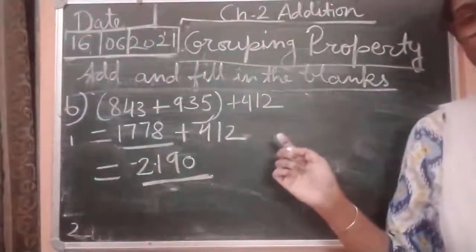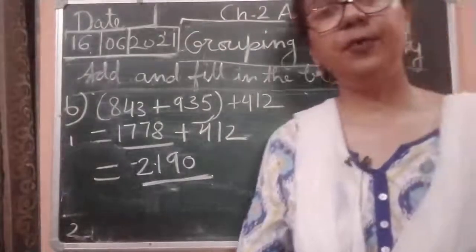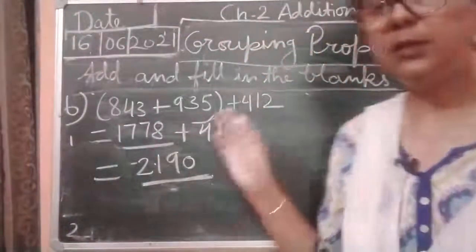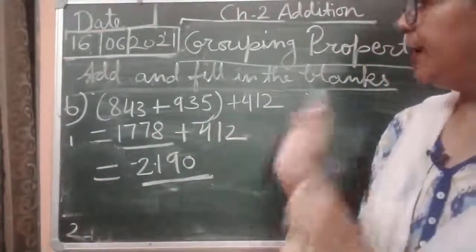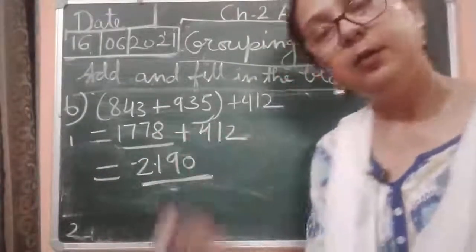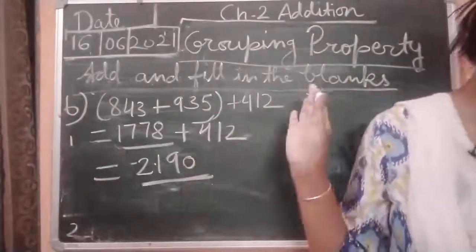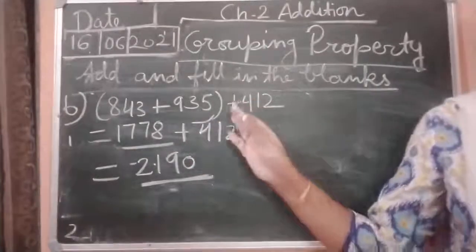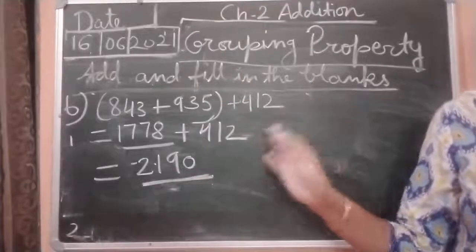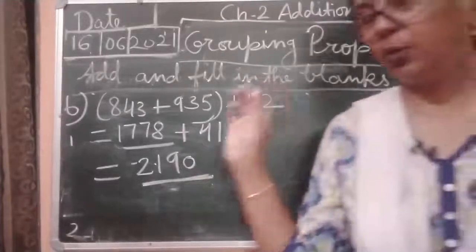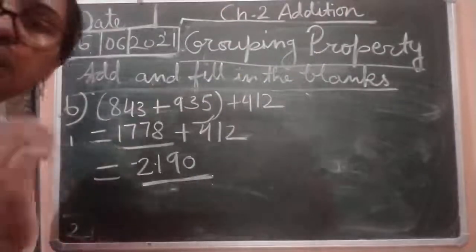So that is why I am telling you: this is the grouping property. After making a different group, using the same numbers — we are just making the group in a different way — but still we will get the same sum. So we will say the sum of these three numbers is the same when we change the groupings of the numbers.